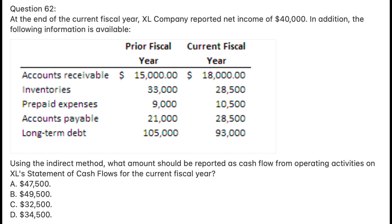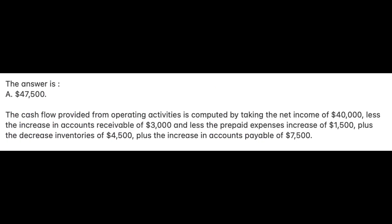Question 62. At the end of the current fiscal year, Excel Company reported net income of $40,000. Using the indirect method, what amount should be reported as cash flow from operating activities on Excel's statement of cash flows? A. $47,500; B. $49,500; C. $32,500; D. $34,500. The answer is A: $47,500. The cash flow provided from operating activities is computed by taking net income of $40,000, less the increase in accounts receivable of $3,000, less the prepaid expenses increase of $1,500, plus the decrease in inventories of $4,500, plus the increase in accounts payable of $7,500.